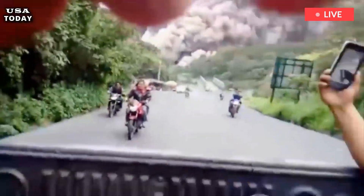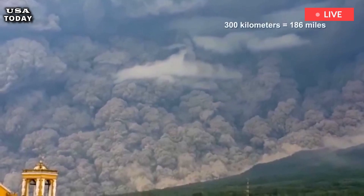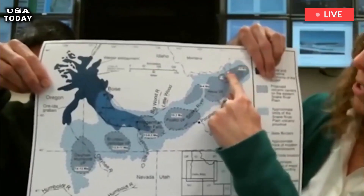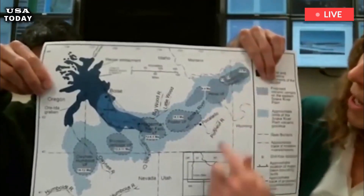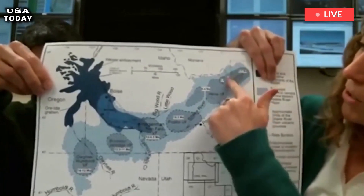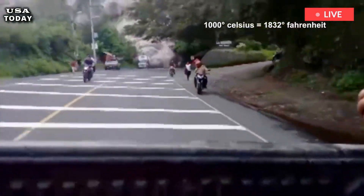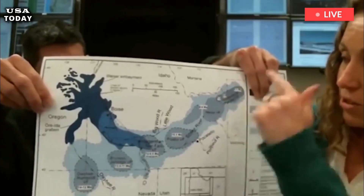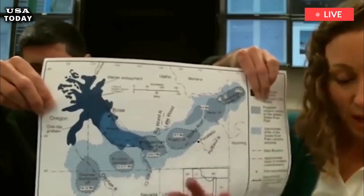Yellowstone Volcano eruption simulations show an unexpected blast would produce ash fallout from the northwest U.S. down to the southern tip of Florida. Volcanic ash fallout of more than 39.4 inches — one meter — would blanket Yellowstone's immediate vicinity in the states of Wyoming, Montana, and Utah.